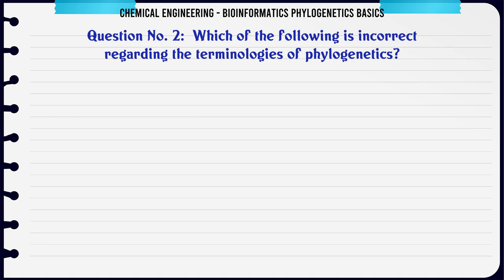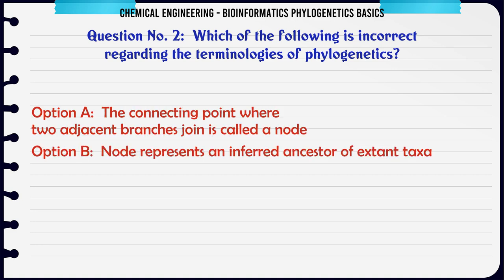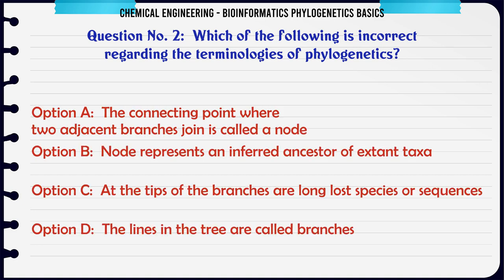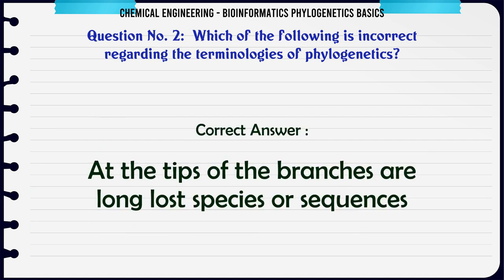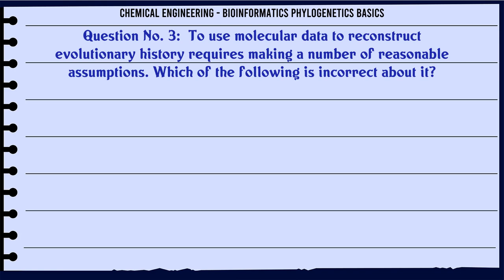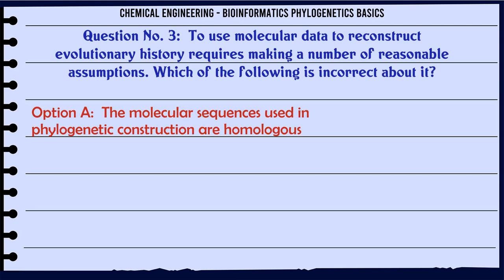Which of the following is incorrect regarding the terminologies of phylogenetics? a. The connecting point where two adjacent branches join is called a node. b. Node represents an inferred ancestor of extant taxa. c. At the tips of the branches are long lost species or sequences. d. The lines in the tree are called branches. The correct answer is: At the tips of the branches are long lost species or sequences.